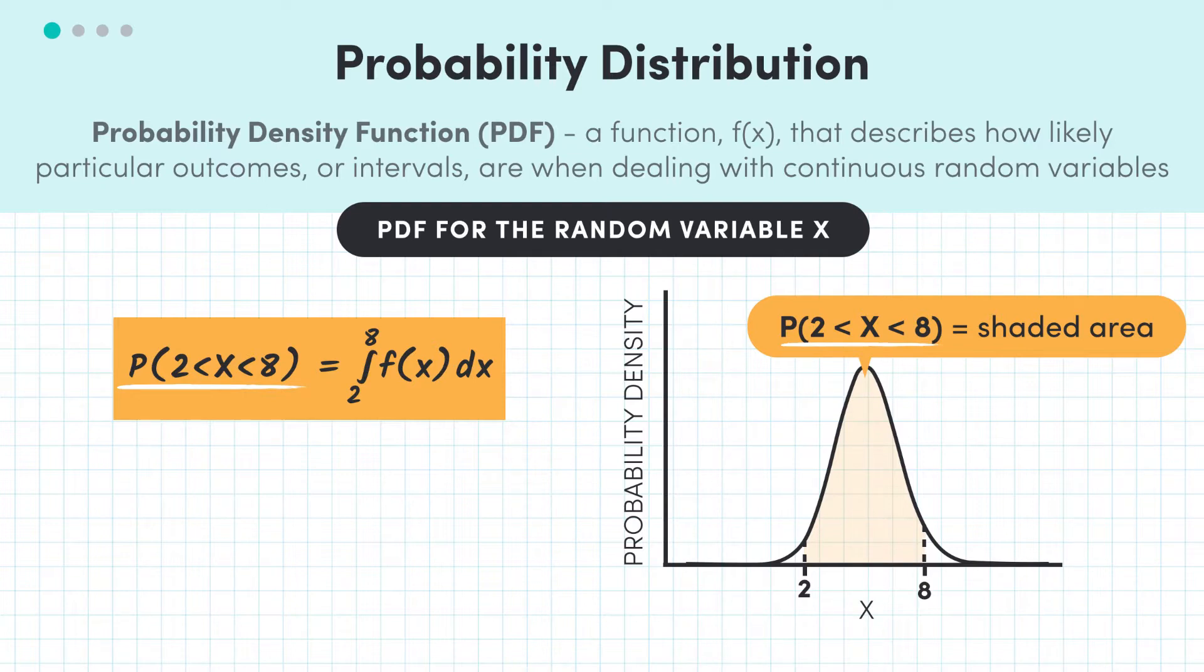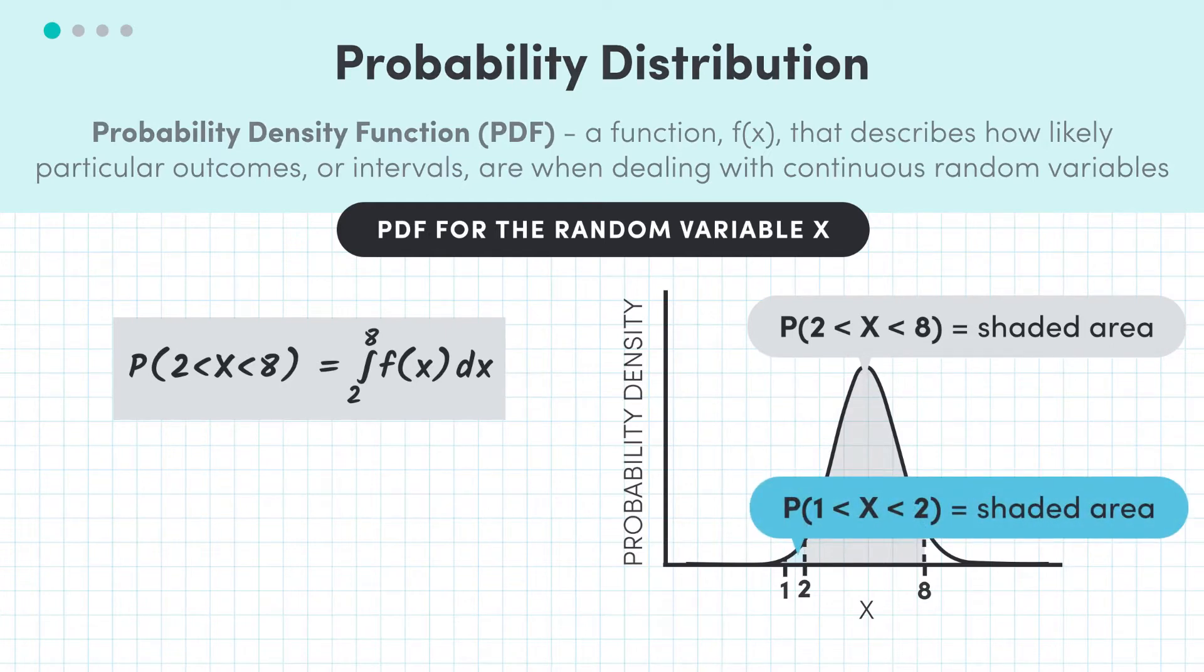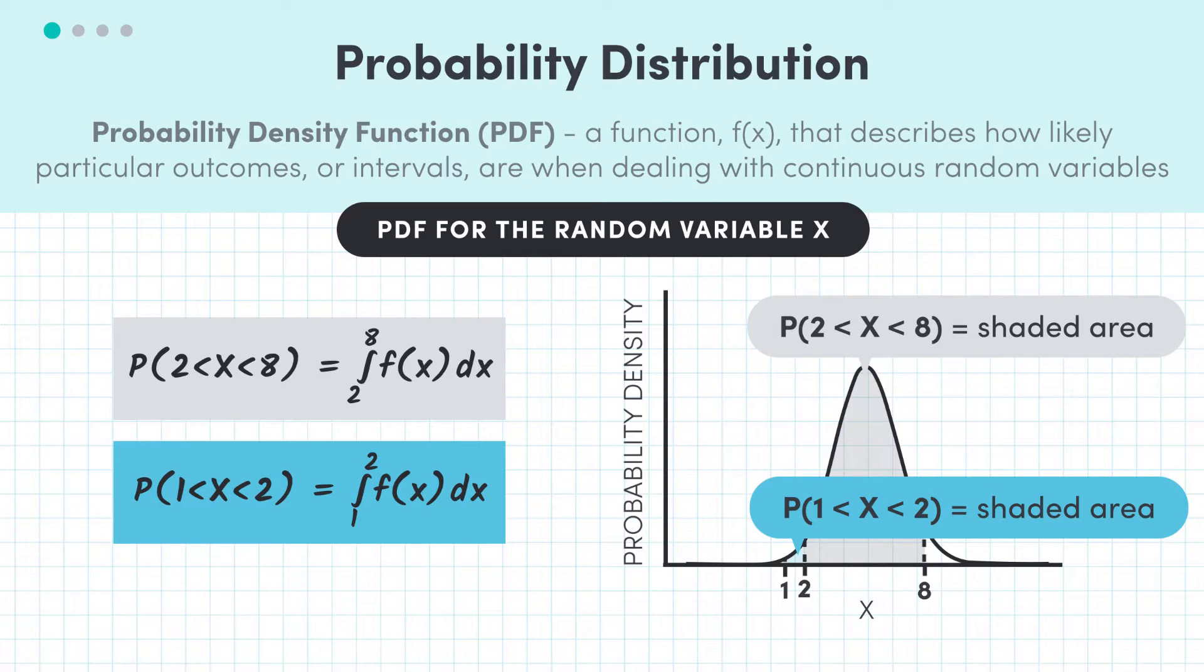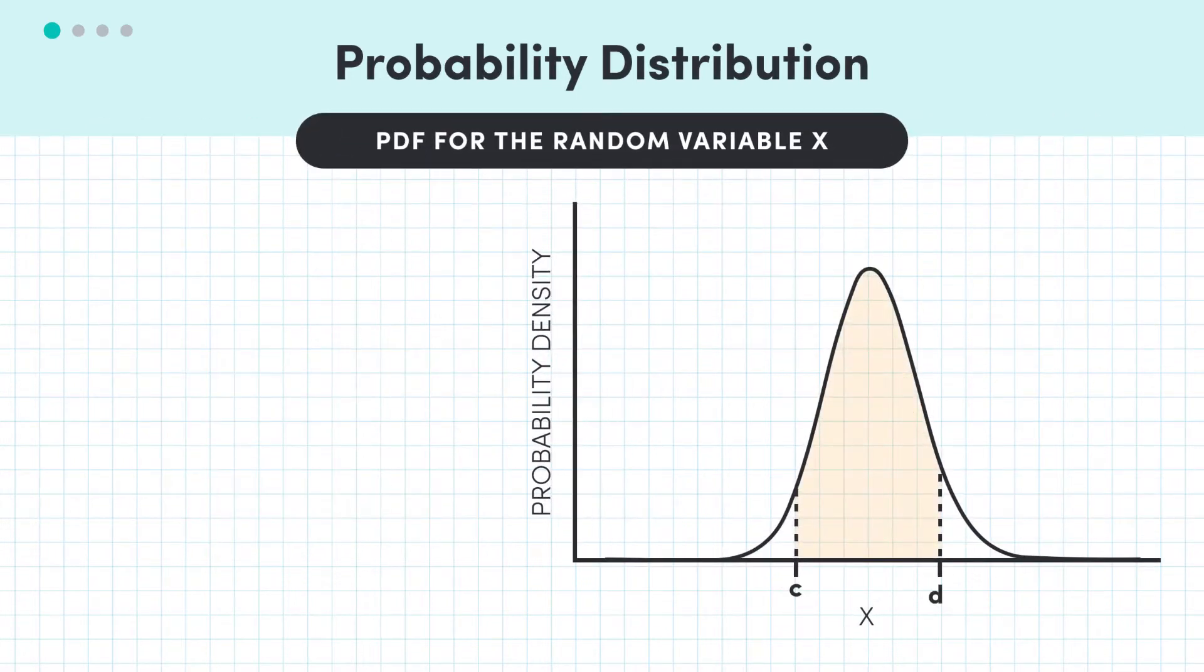Similarly, if we wanted to find the probability that X was between 1 and 2, it would be this area, which is the integral from 1 to 2 of f(x) dx. In general, if we want to find the probability that X is between some values c and d, this is the integral of the probability density function between c and d.